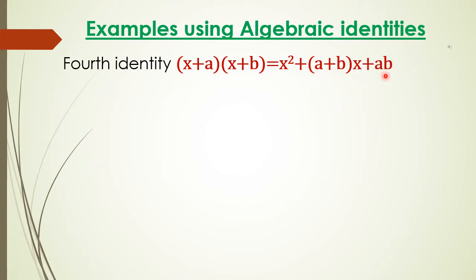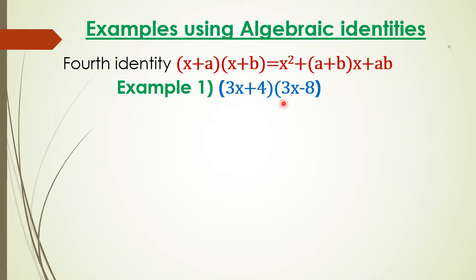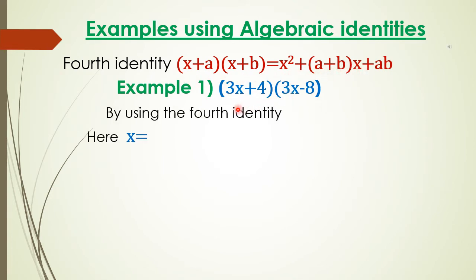Let us take the first example: (3x + 4) into (3x - 8). We will use the fourth identity here, where x is equal to 3x, a is equal to 4, and b is equal to minus 8. Note that the constants a and b can have either positive or negative values.